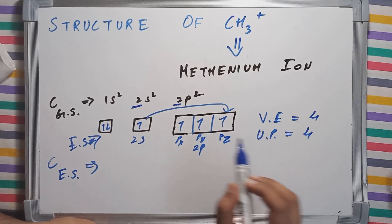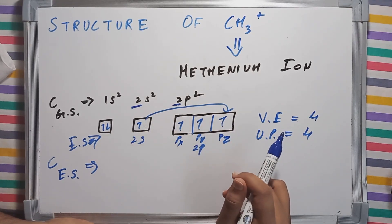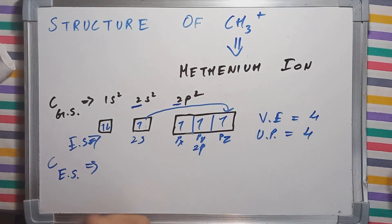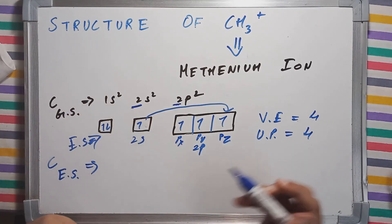I am counting the number of unpaired electrons. It is 1, 2, 3, 4. All these 4 electrons are unpaired. But what would have been the number of unpaired electrons in ground state? It would have been 2.